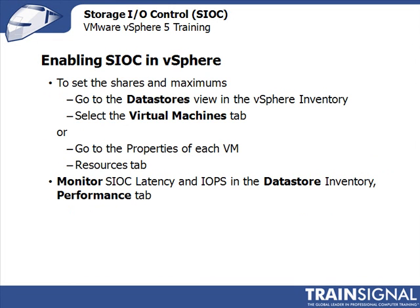To set the SIOC shares and maximums, you can go to the datastores view in the vSphere inventory and then select the virtual machines tab, or you can go to the properties of each virtual machine and then to the resources tab. You can monitor SIOC latency and IOPs in the datastore inventory performance tab. Now let's go over to the vSphere client, and I'll show you how to enable Storage I.O. Control, configure the shares and maximum number of IOPs, and then monitor SIOC latency and IOPs in the datastore inventory.